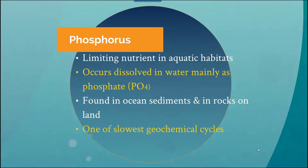Phosphorus is a limiting nutrient in aquatic habitats. It occurs dissolved in the water mainly as phosphate, which is the most common form. It's found in ocean sediment and in rock on land, and it has one of the slowest geochemical cycles, cycling through the ocean, land, and atmosphere at different rates.